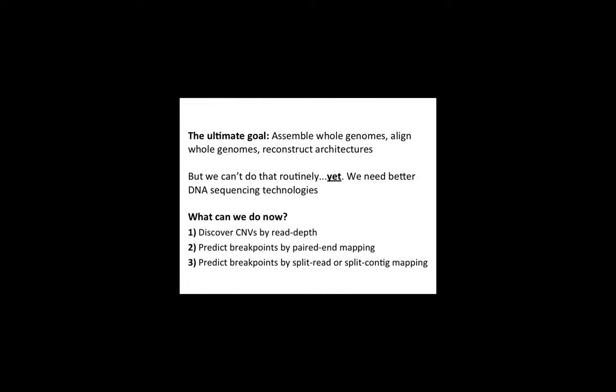The ultimate goal for mapping chromosomal rearrangements would be to do a complete and accurate de novo assembly of each sample genome, then just align the two genomes. For mammalian genomes we can't do it yet, primarily because sequences aren't long enough and the human genome is highly repetitive. In the interim, we use three strategies: read depth, paired-end mapping, and split-read or split-contact mapping.